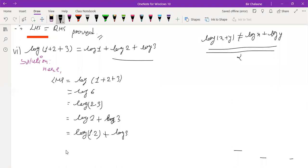Again, use the product rule. We know that log(1·2) means log 1 plus log 2, which gives us log 3. So therefore, LHS equals RHS. This is the correct way.